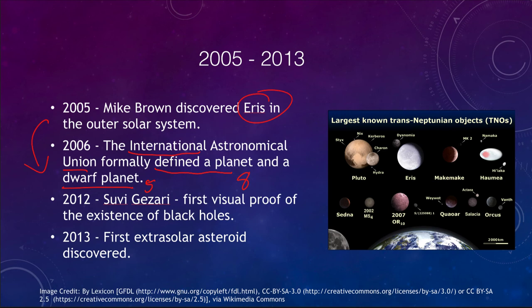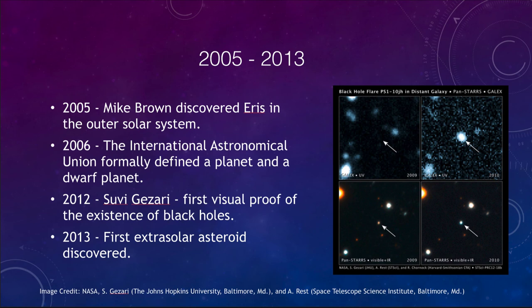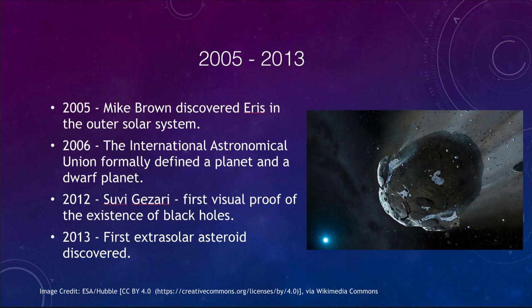In 2012, we got the first visual confirmation of black holes, by Suvi Gezari, giving us visual proof of their existence for the very first time. And in 2013, an extrasolar asteroid was discovered — an asteroid not from our solar system that came from another solar system, traveled through interstellar space, and came close enough to be studied — the first interstellar asteroid ever seen.